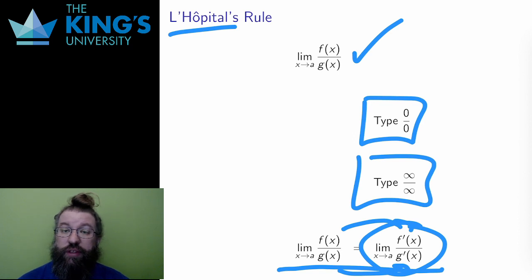Be careful with these derivatives. This is not a quotient rule. This is two individual separate derivatives. The numerator by itself, using whatever rules it needs, and the denominator by itself, using whatever rules it needs.